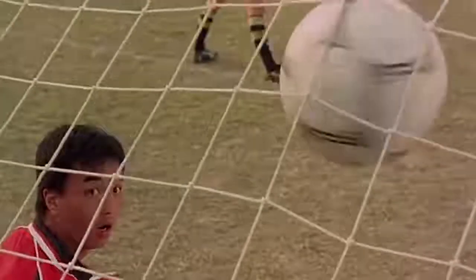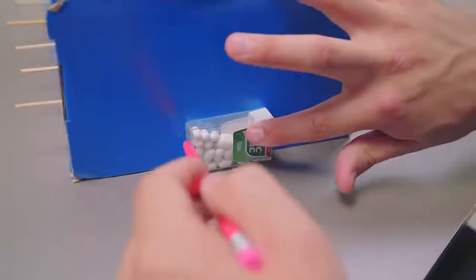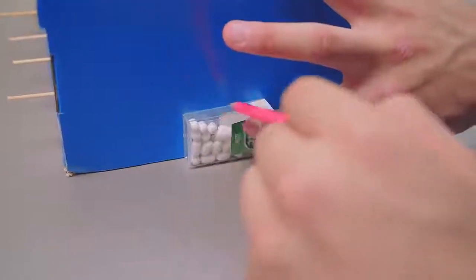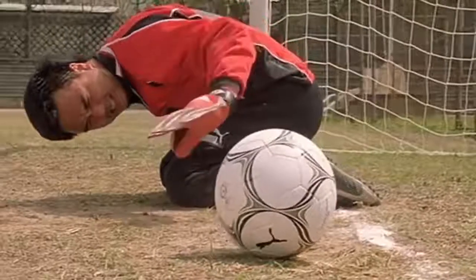Now we need to make the goal. We're going to use the tic-tac box as a stencil. Use it on the small sides of the box to outline the goal and cut off the outlined part. Now it's time to put the net on.